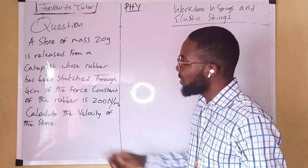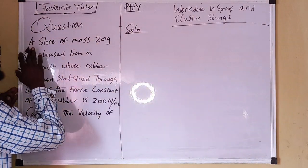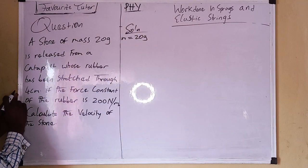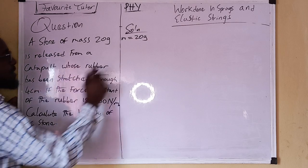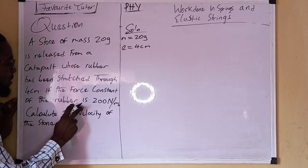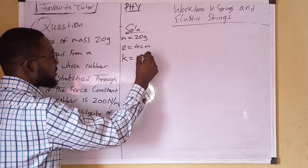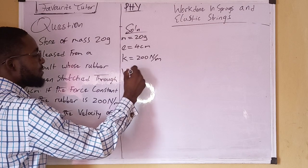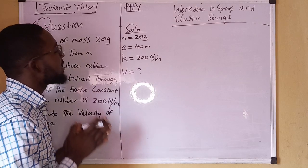We are looking for the velocity of the stone. First, let's bring up the parameters. We have the mass of the stone, which is 20 grams; the extension of the rubber, which is four centimeters; the force constant k, which is 200 newtons per meter; and we are looking for the velocity of the stone.